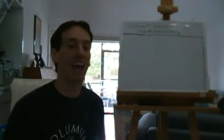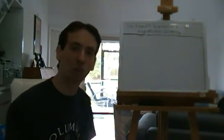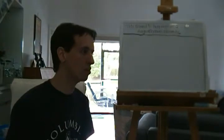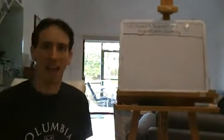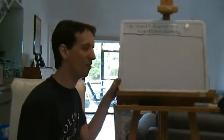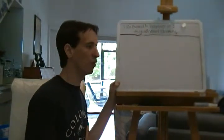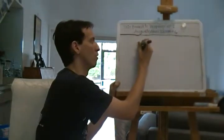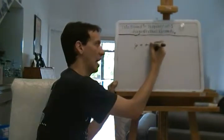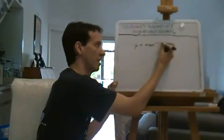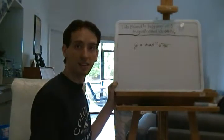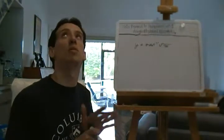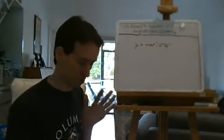Today we're going to look at logarithms. But before we do that, I left you with a question last time, and the question was to find the derivative of y equals the arctan of the square root of x. So, y equals arctan of the square root of x — tan to the negative 1 of the square root of x. This is actually very easy if you remember the basic idea of implicit differentiation.